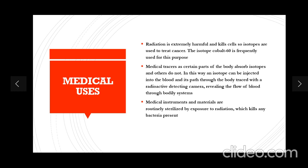Radioactive isotopes also find uses in agriculture, food industry, pest control, archaeology, and medicine. Radiocarbon dating, which measures the age of a carbon-bearing item, uses the radioactive isotope carbon-14. In medicine, gamma rays emitted by radioactive elements are used to detect tumors inside the human body. Food irradiation is the process of exposing food to a controlled level of gamma rays, which kills many types of bacteria present, making food safer to eat.